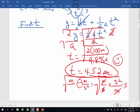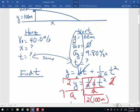So now that I know time on one side, the 4.52 seconds, I can then find x, my horizontal displacement.